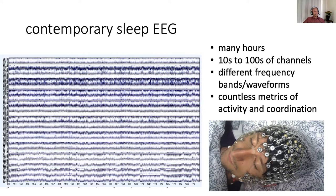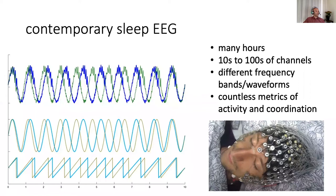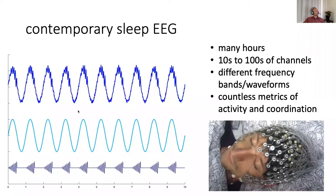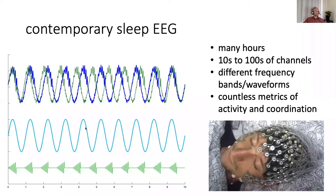And then at the same time, all those different channels can be decomposed into different frequency bands. You can detect different waveforms like sleep spindles or slow oscillations. And then on top of that, we have countless metrics of activity and coordination between channels, between frequency bands. Here I'm showing you two simulated traces of a slow oscillation with a spindle on top for two different channels.